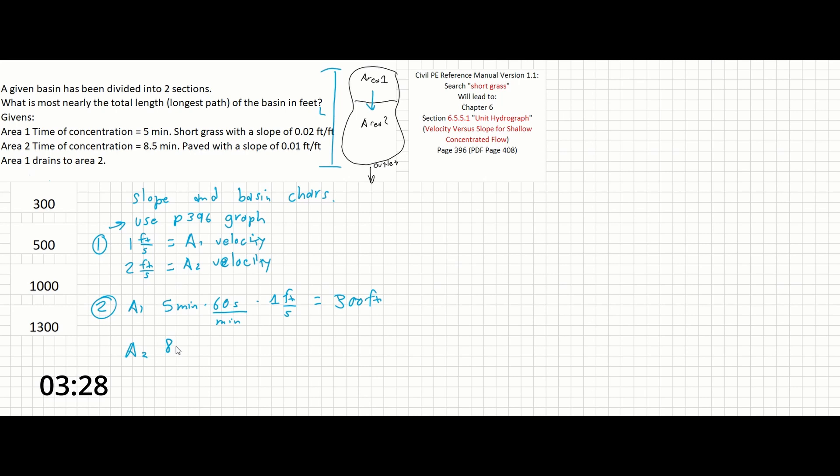For area 2, we have 8.5 minutes times 60 seconds per minute times 2 feet per second, which gives us 1,020 feet.